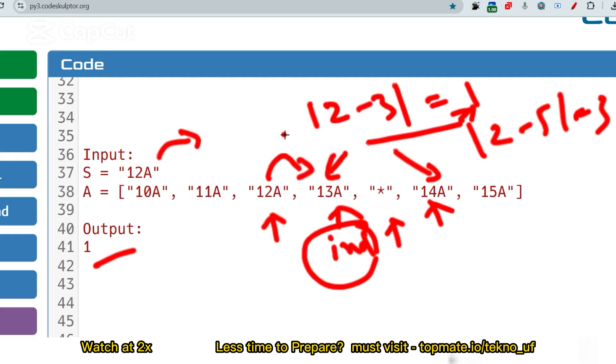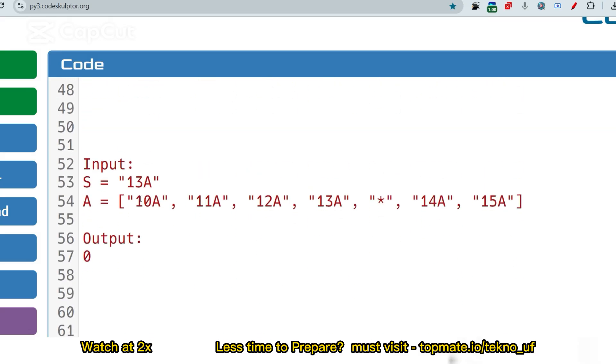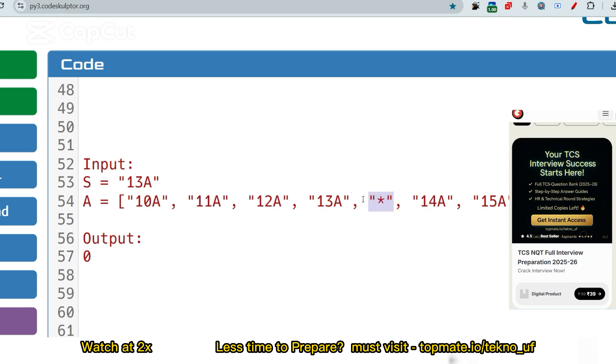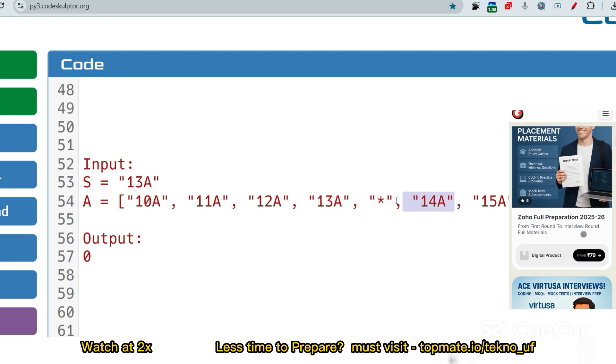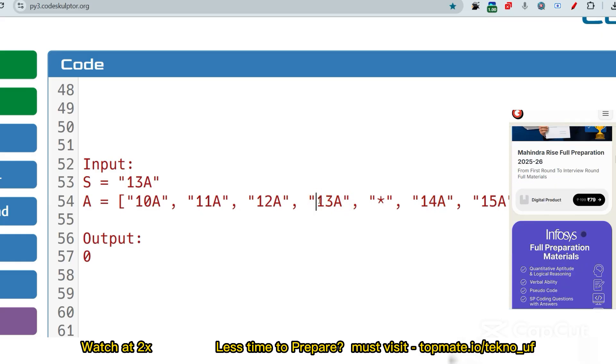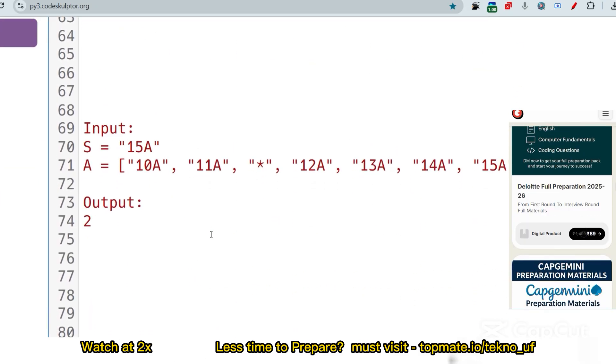Let me show the next sample input. S is 13A. If the S is here, that means the star is gap. Just near the gap, those seats are called corner seats. This is the corner, this is the corner. So that's why if this is corner, you have to return zero. This is the second sample input.